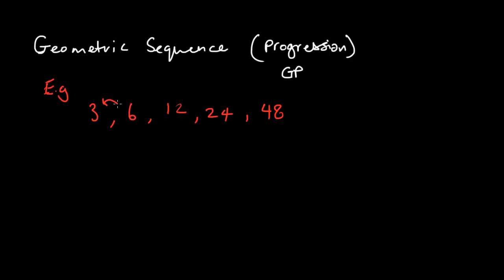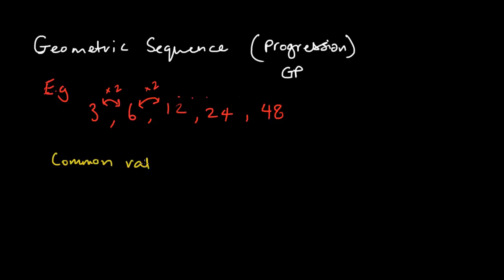You can see that from here to here you're multiplying by 2, and the same applies throughout the entire sequence. The notation used is very similar to before, except that we don't need a common difference but rather a common ratio, or R. This is just like arithmetic progressions, but instead of a common difference we have a common ratio R, and that is the key term that characterizes geometric sequences.